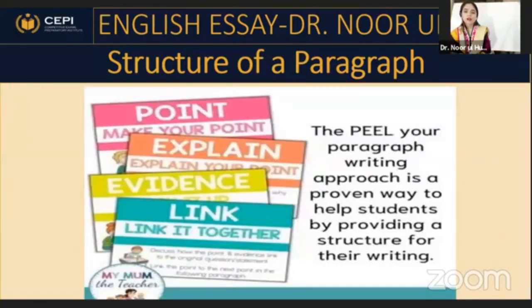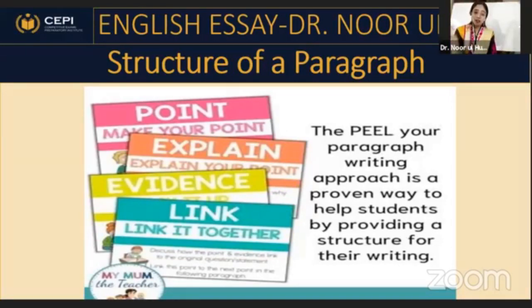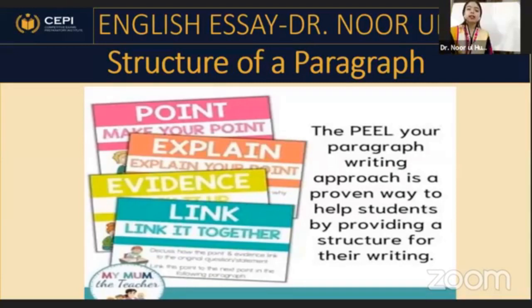Another way to understand paragraph structure is PEEL. P stands for Point — make your point, your topic sentence. E is for Explain — give the description. E is for Evidence — which is your statistic or data. And L is for Link — your conclusion, where you summarize and link everything together.